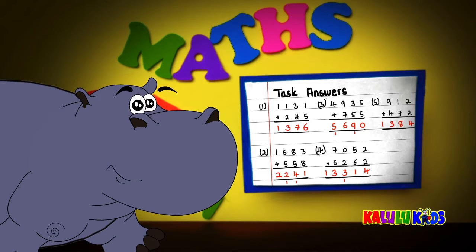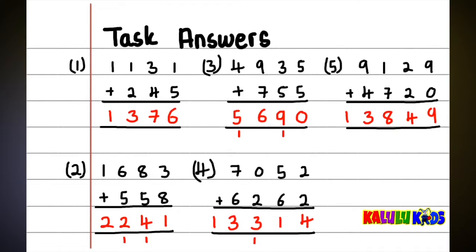Now, check your answers for the independent task. The first answer, number 1, should be 1,376. Number 2, it should be 2,241. Number 3, the answer should be 5,690.